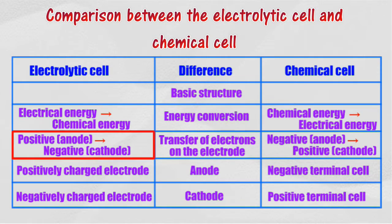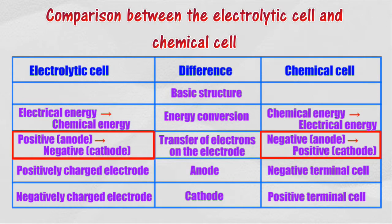Electrons move from the positive to the negative electrode in the electrolytic cell, while in the chemical cell, electrons move from the negative to the positive terminal.